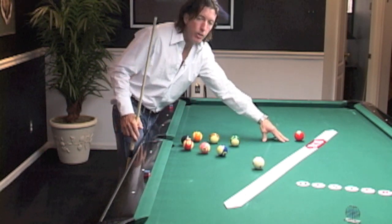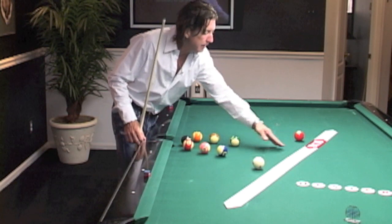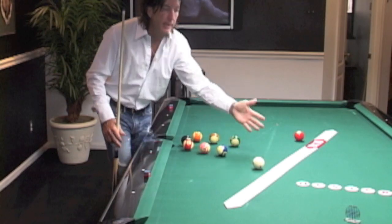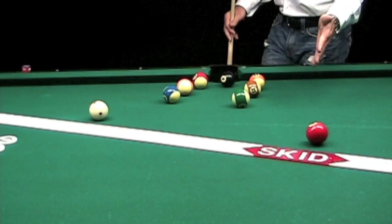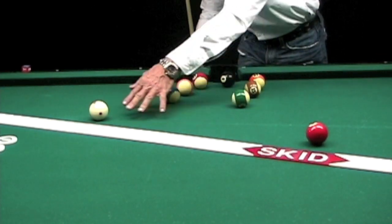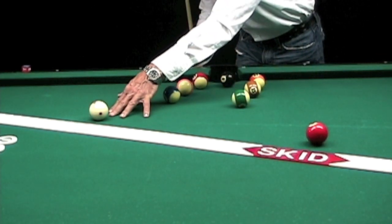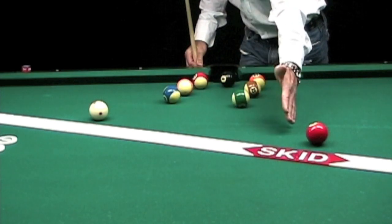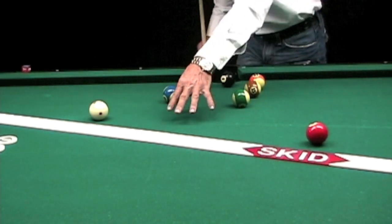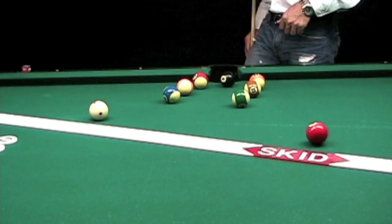Now all I need to do is add the distance that I need to come back to oyster, and I will have my calculation for an adjusted oyster. So here I have a half a tip below. I'm going to add a diamond — a diamond is a half. So now I'm at a full tip below to a tip and a quarter below center. And that will put me in perfect position for the eight ball in the side pocket.